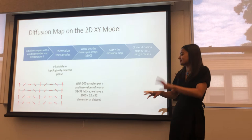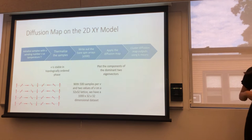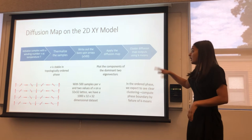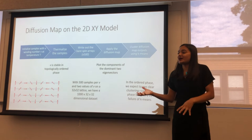Then we apply the diffusion map. We get these eigenvalues and eigenvectors. And at the very end, you can do k-means clustering on the eigenvectors or the components of the eigenvectors. And we can tell if we're in the topological or non-topological phase by the failure or the success of this clustering algorithm.